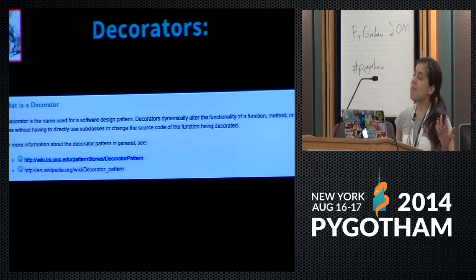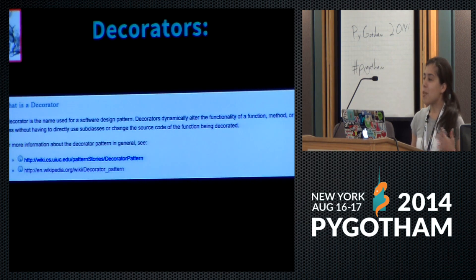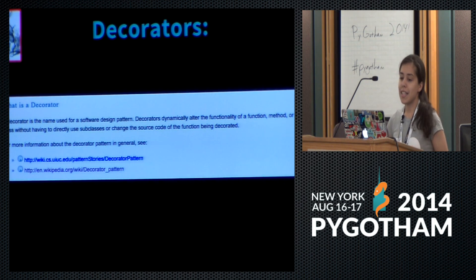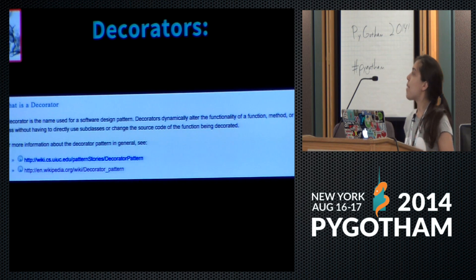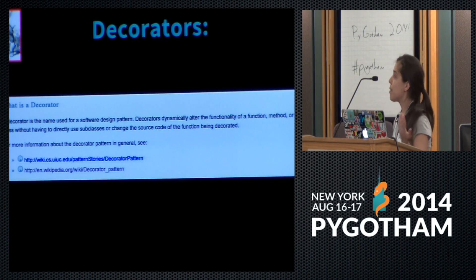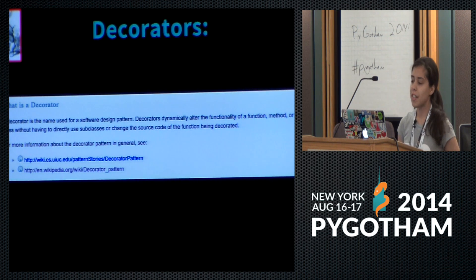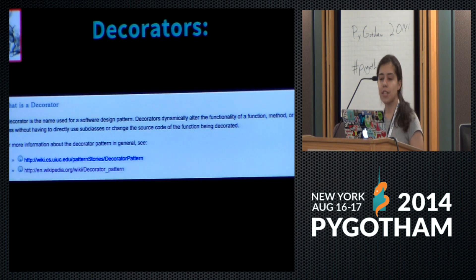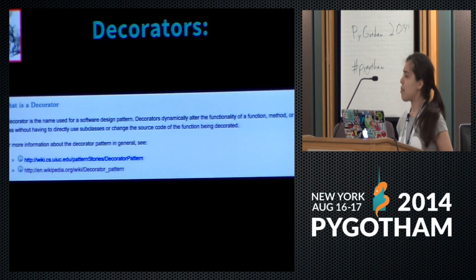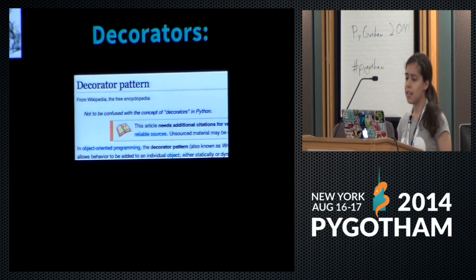So I'm just getting started with Python — maybe written one or two scripts, maybe a class — and I want to learn some more advanced features, and this thing decorators keeps coming up. So I go to Google, I find Python.org, the authority, right? I find this FAQ: what is a decorator? A decorator is the name used for a software design pattern. So it's not something I can use, it's just the way I can structure my code. Decorators dynamically alter the functionality of a function, method, or class without having to directly use subclasses or change the source code of the function being decorated. I still don't understand — does that mean I can change a function into an integer? Oh look, there's a link to Wikipedia.